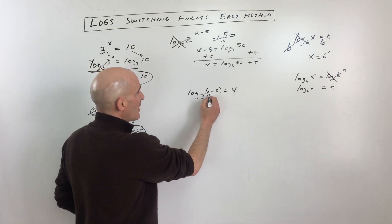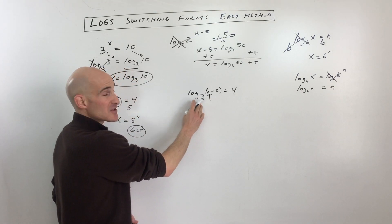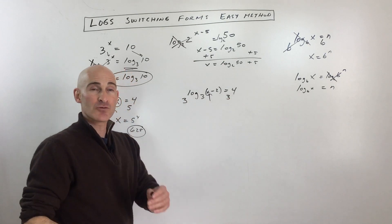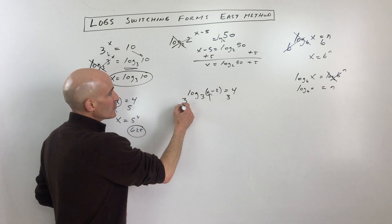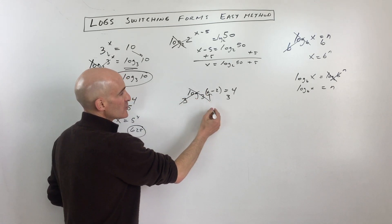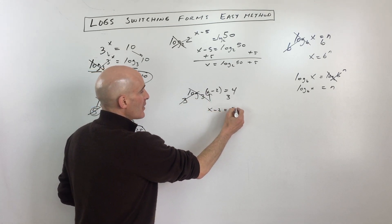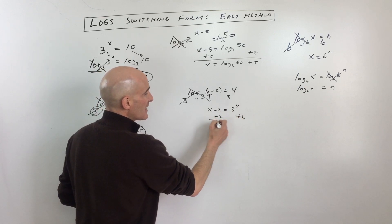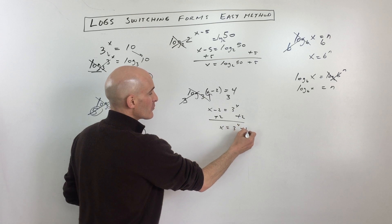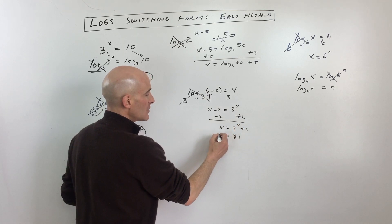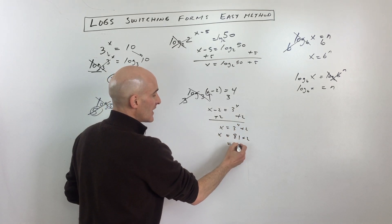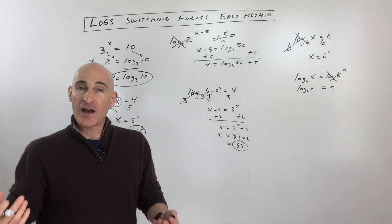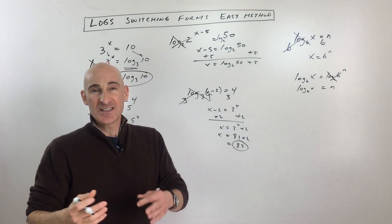We want to get x by itself, we can see that this is a log base 3, we want to get rid of that log base 3 by doing the inverse, the opposite. So we're going to exponentiate both sides using the same base, those cancel one another out, and now you can see we have x minus 2 equals 3 to the 4th. Add 2 to both sides and you can see you have x equals 3 to the 4th plus 2. 3 to the 4th is 81, so we're really just looking at 81 plus 2, which is 83, and you got it.